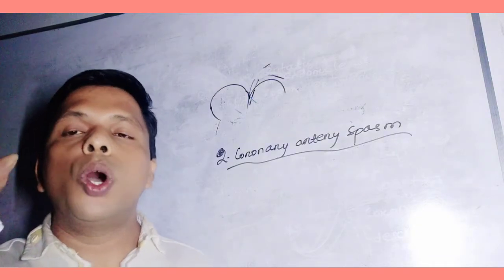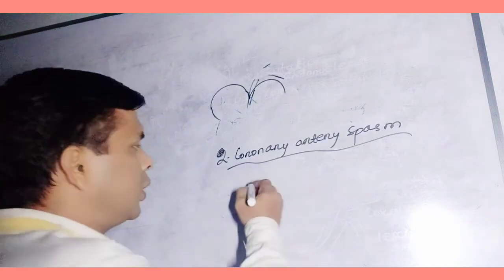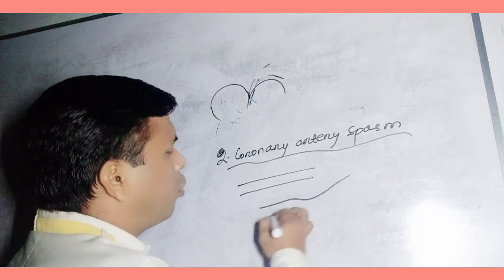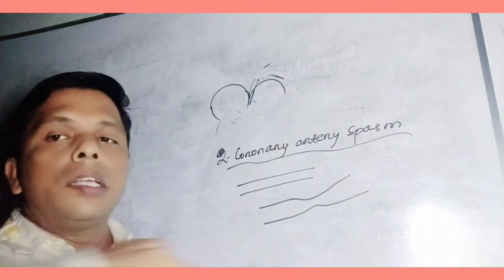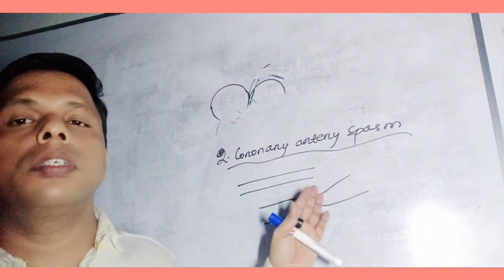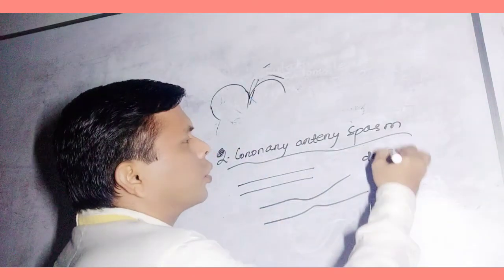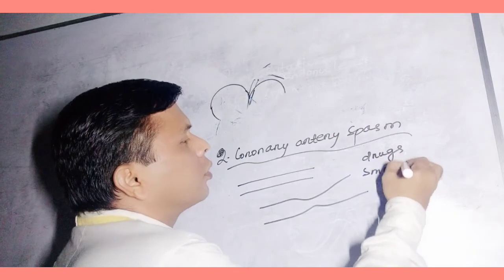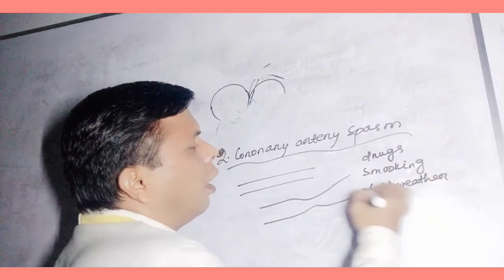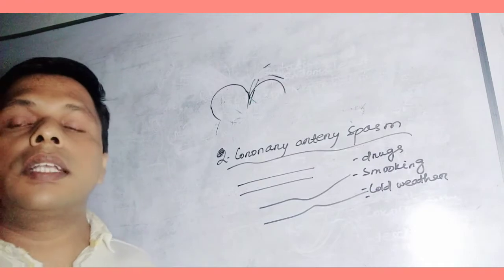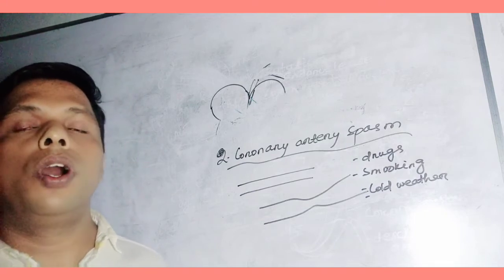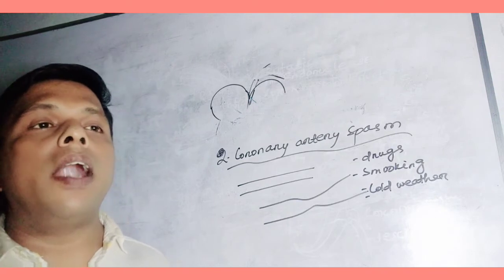Suppose this is the lumen of coronary artery. At some places the coronary artery becomes narrow and hard. What are the causes? Due to drugs, the common cause of it is taking drugs. Other causes are smoking, continuous exposure to cold weather, and mental stress.